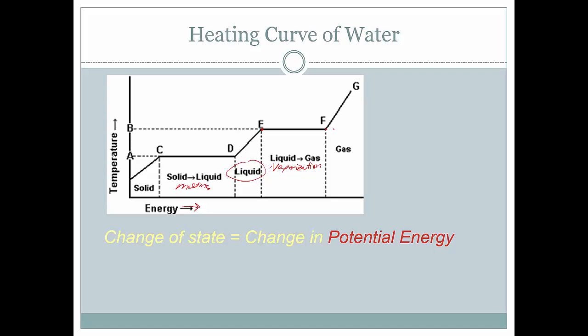So other things you need to know about this curve. It's not only just where the solid, solid liquid, where the phase changes happens, you need to know about the energy. So when you see a change of state, that's a change in potential energy. And a change of state happens at the flat parts. So at the flat lines, however you want to write it. No slope, flat lines, or no change in temperature.